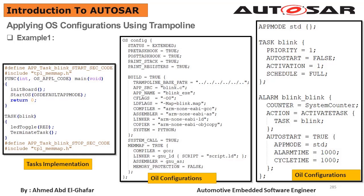Our action here is to activate our task called Blink. The next attribute is autostart, and this alarm is autostarted true. The easiest way to set a cyclic alarm is to make it autostarted. Autostarted alarms are started during the StartOS call, which you can see in the Blink.c file, and autostarted alarms can be set on a per-application-mode basis. So you can choose in which application mode the alarm is autostarted. Each autostarted alarm must also specify whether it is started at an absolute or relative counter value, and the associated increment or start and cycle parameters must be configured.